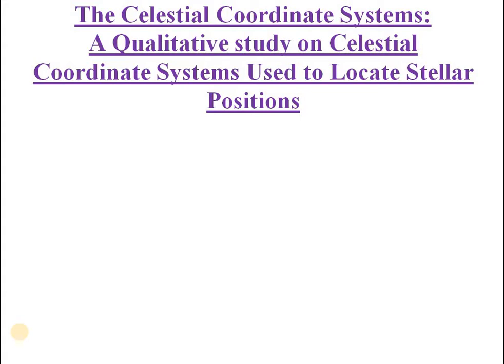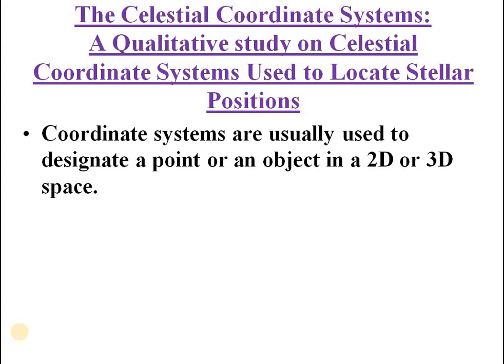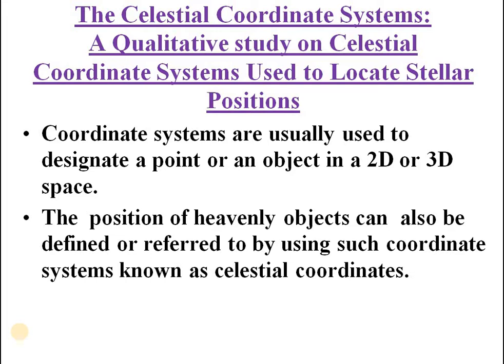As you know, coordinates are used to locate objects or points. In ordinary mathematics, we talk about coordinate systems where coordinate systems are usually used to designate a point or an object in a 2D or 3D space. A 3D dimensional coordinate system can represent a point in space also. When we come to astronomy, we also deal with heavenly objects. So position of heavenly objects can also be defined using such coordinate systems. That is known as celestial coordinates.